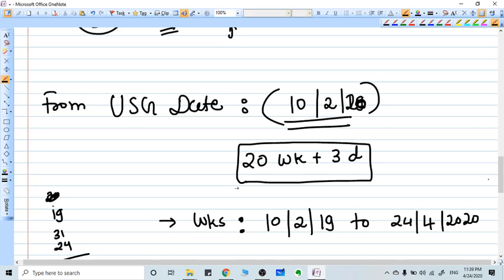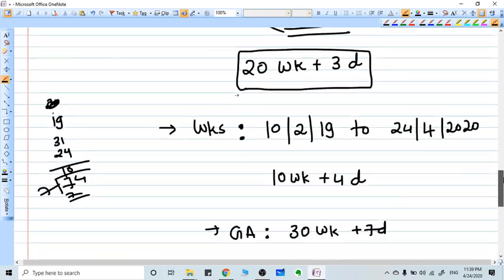For example, the USG has been performed on 10th February of 2020. Now what I need to do is, from 10th February 2020, how many days happened, how much time happened in weeks till today's date, that is 24th of April.